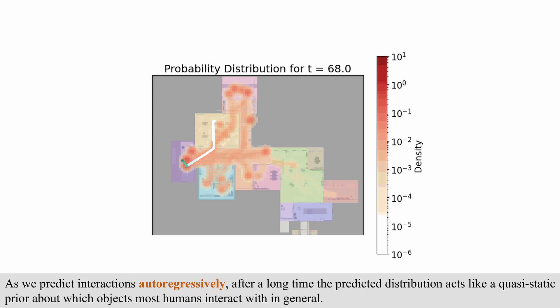As we predict interactions autoregressively, after a long time the predicted distribution acts like a quasi-static prior about which objects most humans interact with in general.